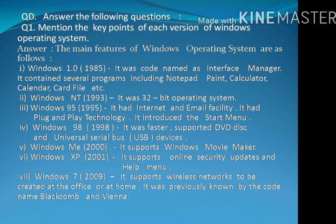Number 2 — Windows NT: It was introduced in 1993. It was a 32-bit operating system. Number 3 — Windows 95: It was introduced in 1995. It had internet and email facility, plug and play technology, and it introduced the Start Menu. Number 4 — Windows 98: It was introduced in 1998. It was faster, supported DVD disc and Universal Serial Bus (USB) devices.